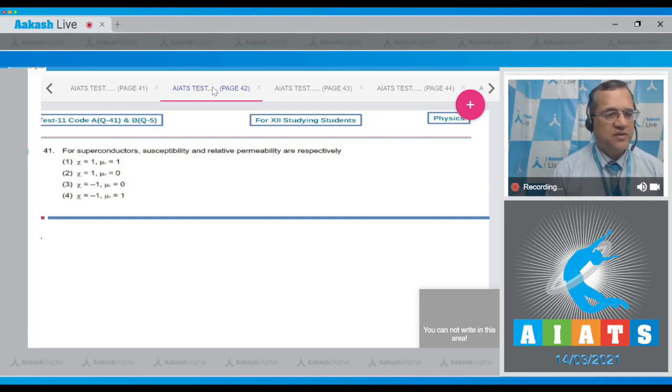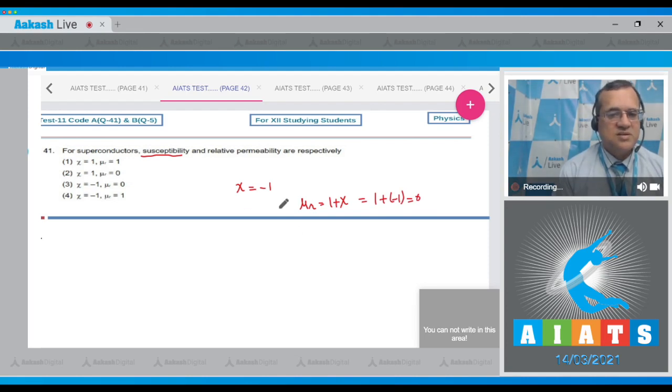Question 41: For a superconductor, susceptibility and relative permeability are? Superconductors are perfect diamagnetic materials. For diamagnetic materials, the susceptibility χ is -1, and μᵣ = 1 + χ = 1 + (-1) = 0. So χ = -1 and μᵣ = 0, making the third option correct.